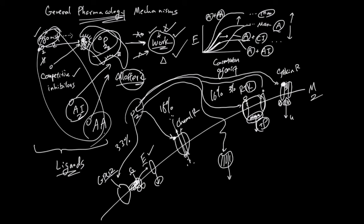For RTKs, you typically need two ligands binding two receptors for dimerization, and then the tail does the job directly. For cytokine receptors, a bigger ligand binds to the receptor, another receptor comes and binds to that complex, and you need a little bit of help on the cytokine tail side to do the work.